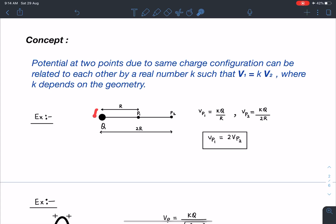So if there is a point charge and there is a point P1 at a distance of R and another point P2 is at a distance of 2R, potential at P1 I can write as KQ by R whereas potential at P2 I will write as KQ by 2R. These P1 and P2 potentials are related to each other with a number. VP1 equals 2VP2, so you can say here the K value is 2 for this case.